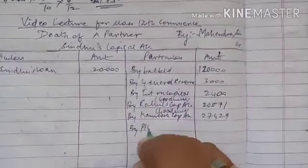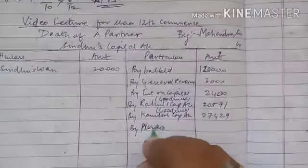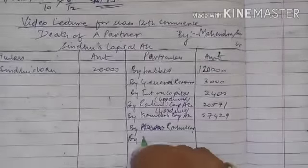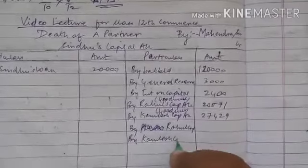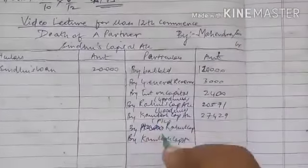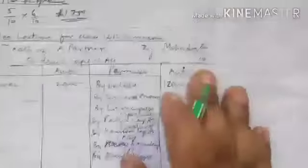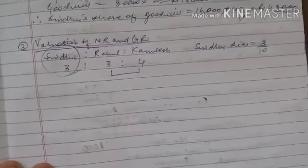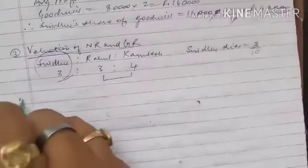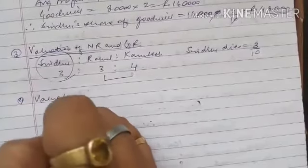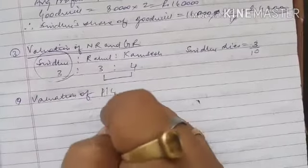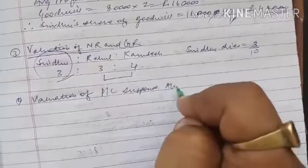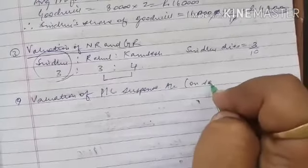Now distribution of P&L. This again will be distributed to both the partners, Rahul and Kamlesh capital account. This is the distribution of P&L. Now the fourth working will be valuation of P&L.